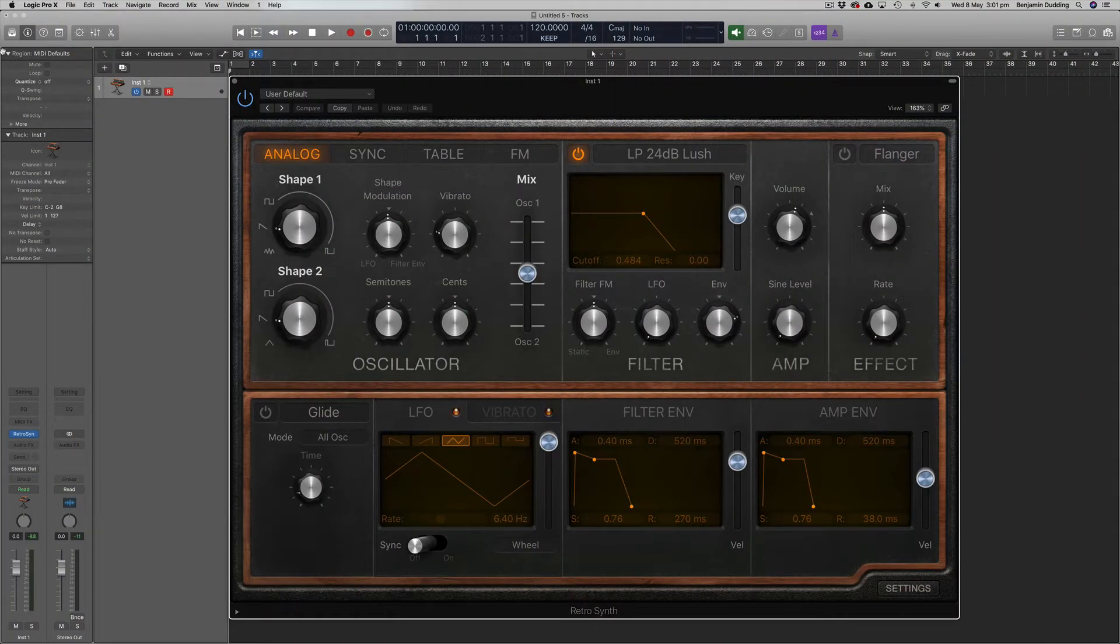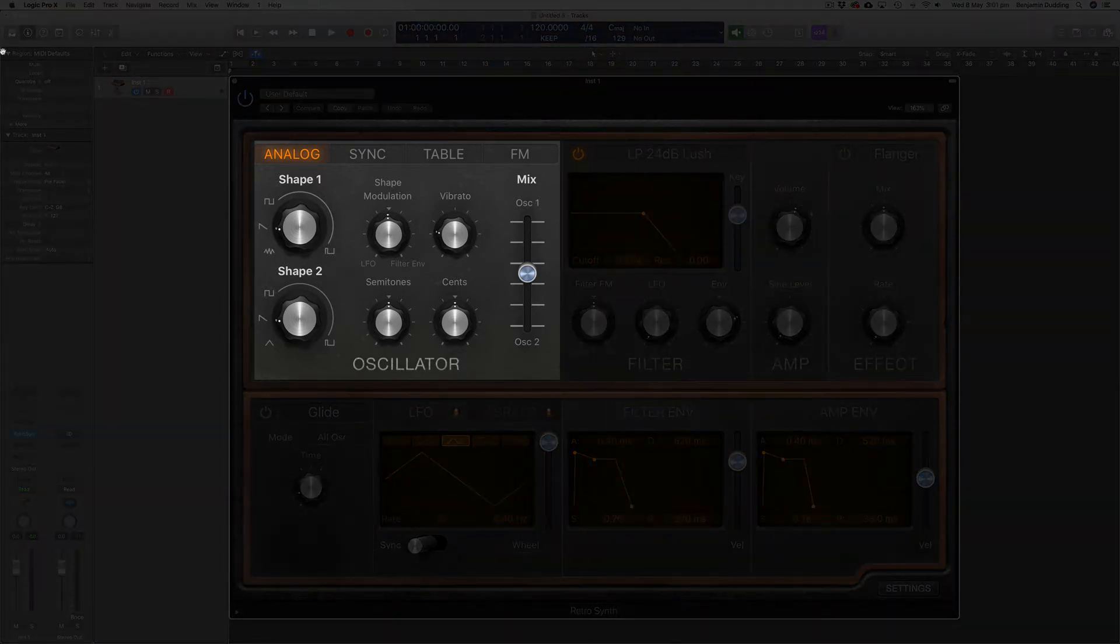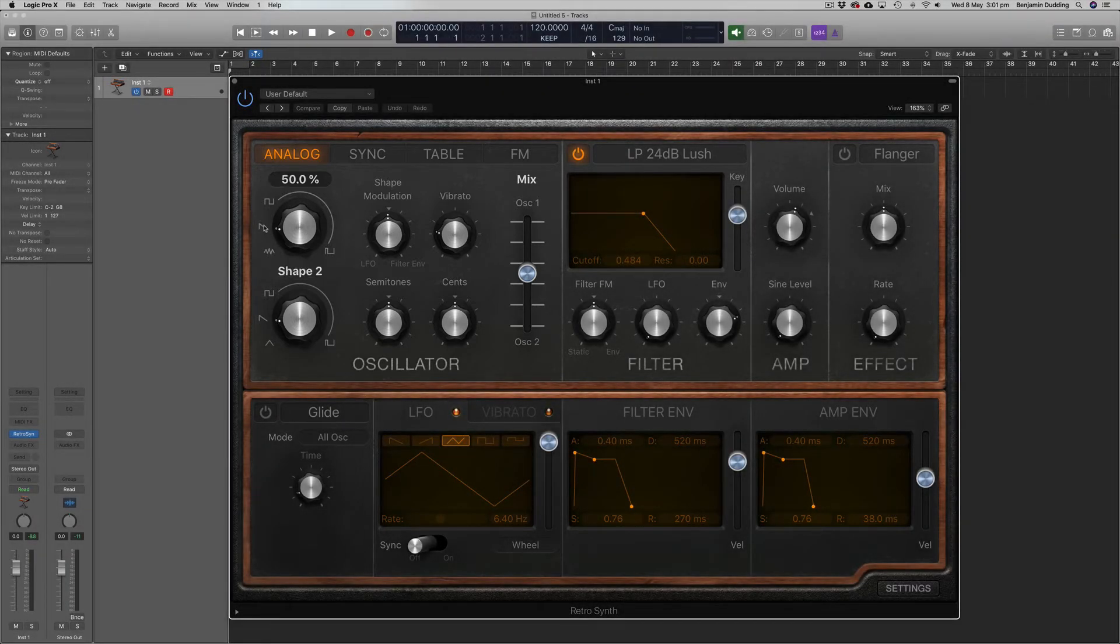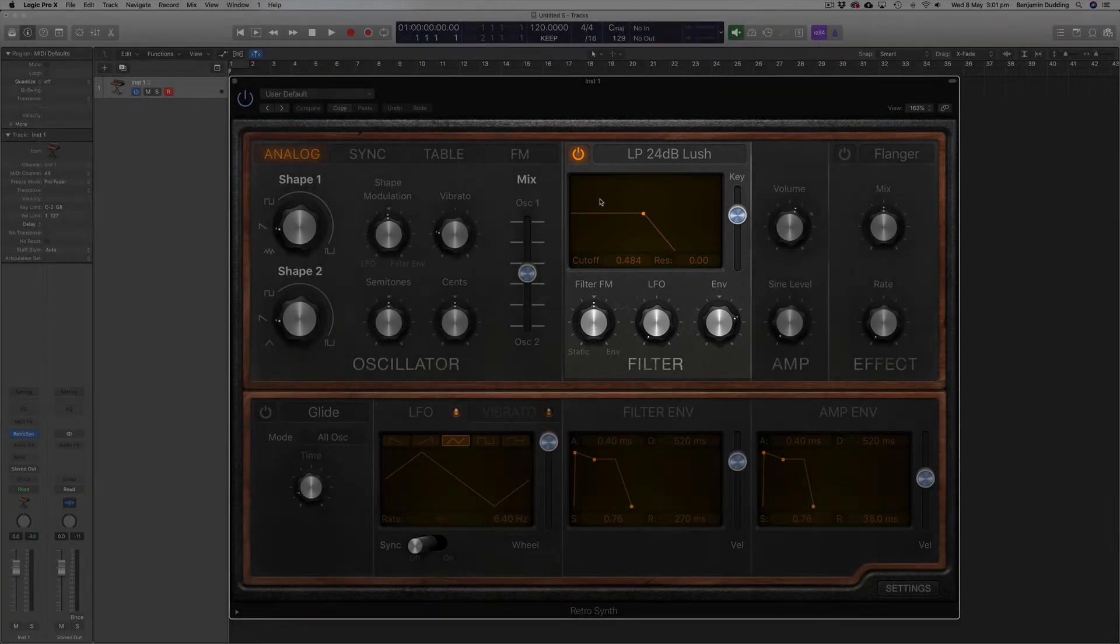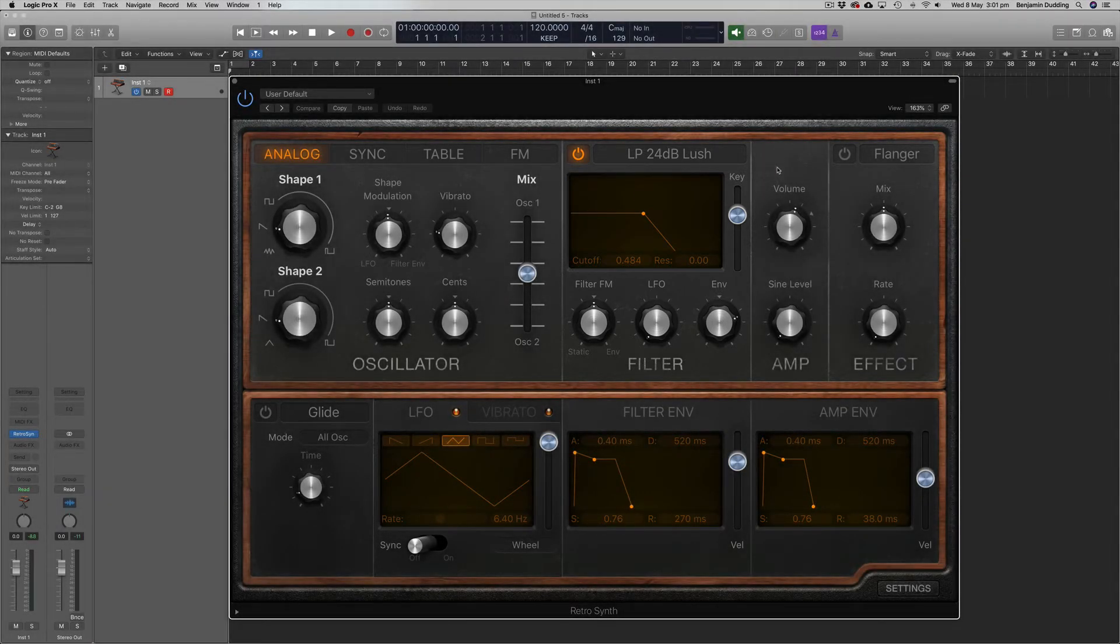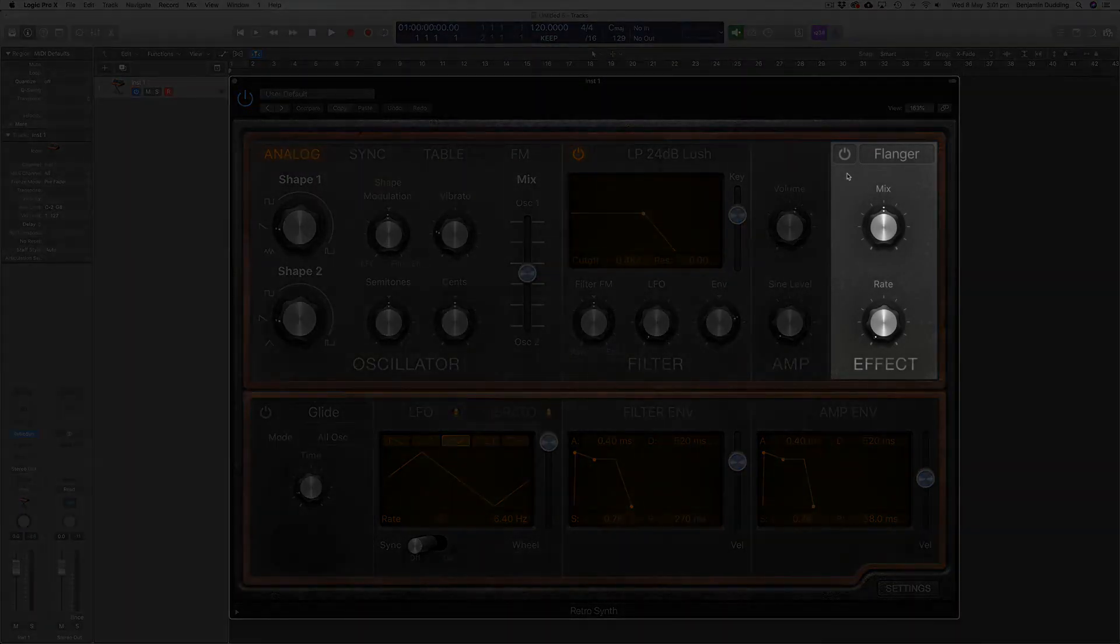So here in Logic, looking at RetroSynth, we can see starting at the top left of the interface we have the oscillators. We've got two oscillators here. And then moving on here in the top middle, we've got the filter section, followed by a volume section, and then some basic effects.